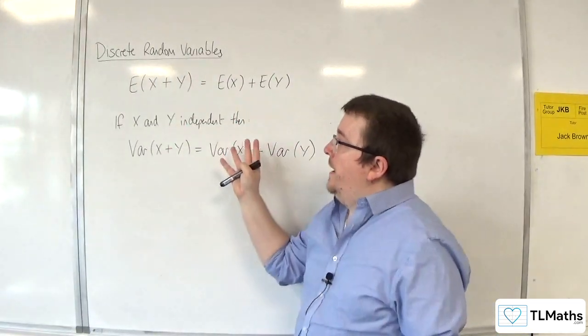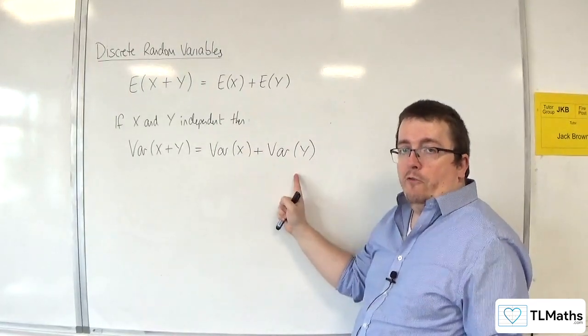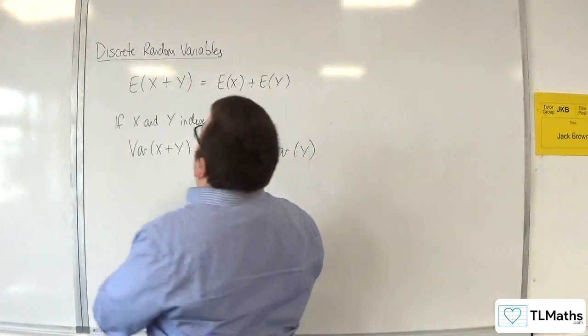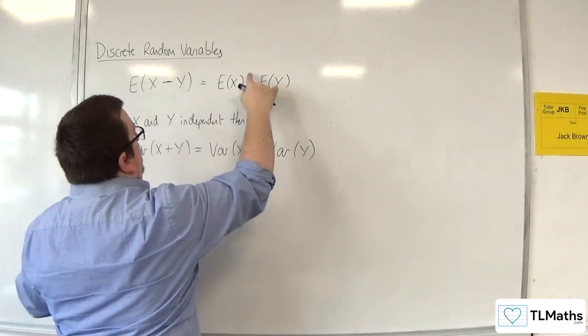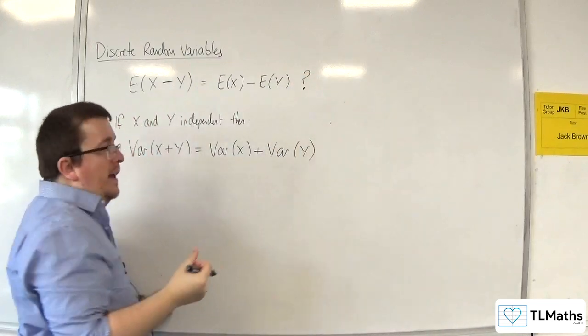And if X and Y are independent, then Var of X plus Y is equal to Var of X plus Var of Y. In this video, I want to check to see whether E of X take away Y is equal to E of X take away E of Y. Is that the case?